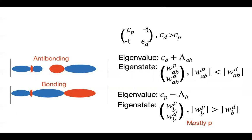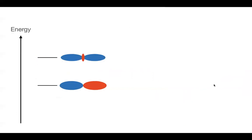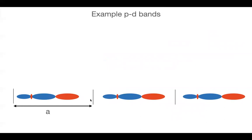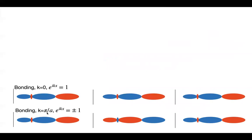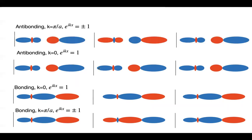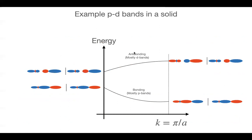The bonding orbital is mostly P in character and the antibonding orbital is mostly D in character — this is quite important. We can draw PD bands: at k=0 you have the bonding state, and at k=π/a the bonding state has the same phase as opposed to the different phase at k=0. The antibonding state at k=0 is actually lower in energy than at k=π/a because there the orbitals are in phase, while at k=π/a they are not.